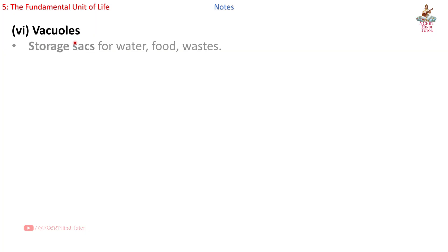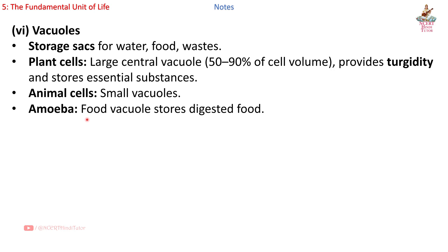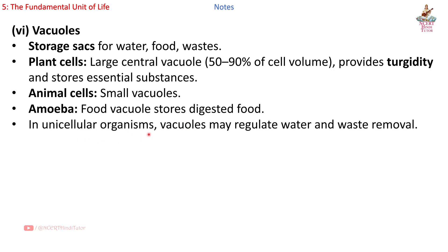6th — Vacuoles: storage sacs for water, food, and waste. Plant cells have a large central vacuole occupying 50–90% of cell volume, providing turgidity and storing essential substances. Animal cells have small vacuoles. In amoeba, a food vacuole stores digested food. In unicellular organisms, vacuoles may regulate water and waste removal.